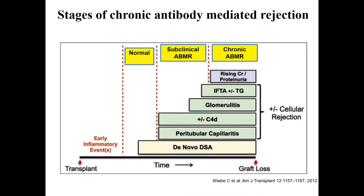This figure shows a proposed model for patients developing de novo DSAs as they evolve from transplantation to subclinical ABMR, chronic ABMR, and finally graft failure. Importantly, the presence of DSA is currently still mandatory for diagnosis of CAMR. However, in the clinical setting, it is not uncommon for these diagnostic criteria to appear as an incomplete combination.